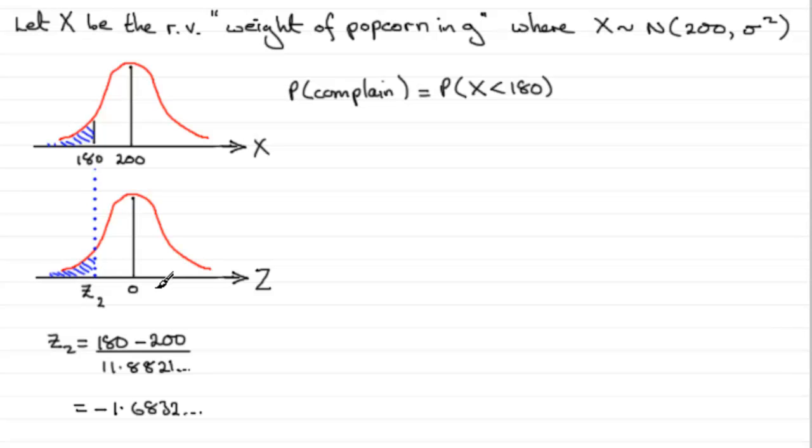Now that we've got that, we can say that the probability that X is less than 180 is going to be exactly the same as working out the probability that Z is less than minus 1.6832, and so on, standard deviations below the mean.